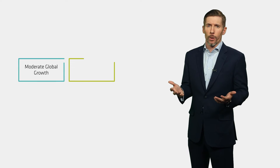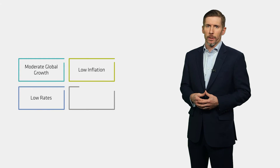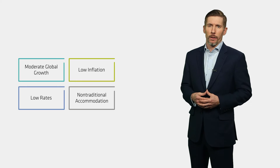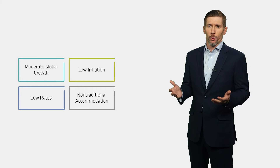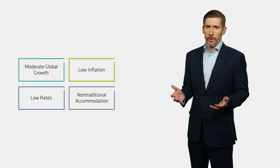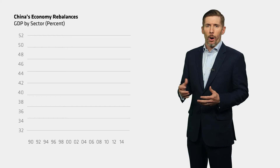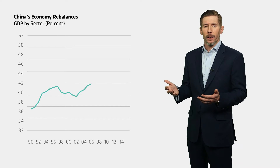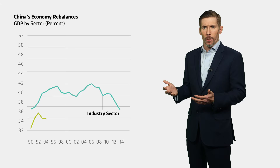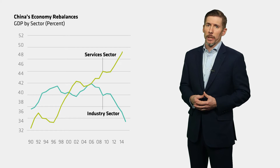At a macro level for us, it's still moderate global growth, low levels of global inflation, and generally lots of accommodative policy throughout the world. But there are stories within the stories. China is a multidimensional story. However, at a high level, we still think China avoids a hard landing as its growth slows and it transitions to a services-based economy.